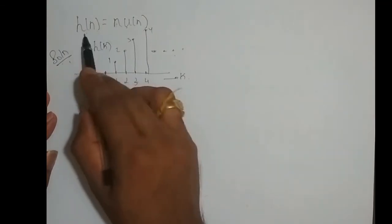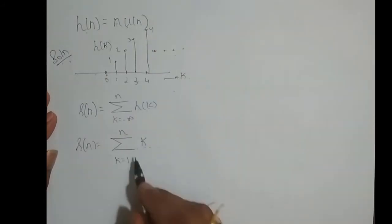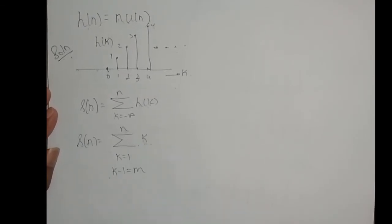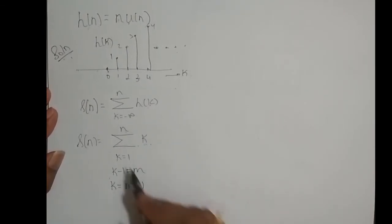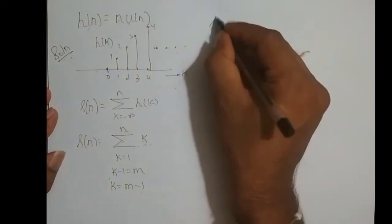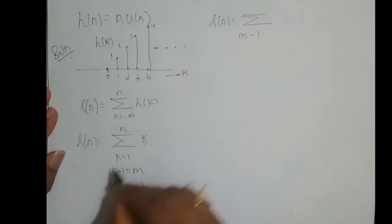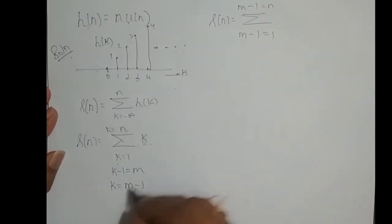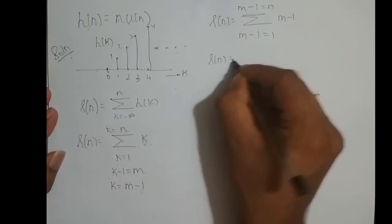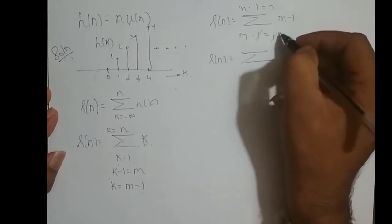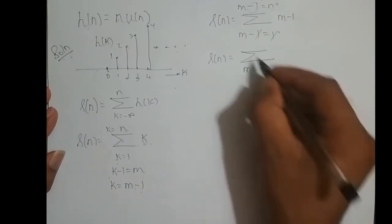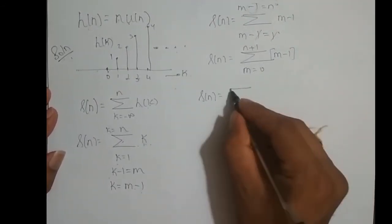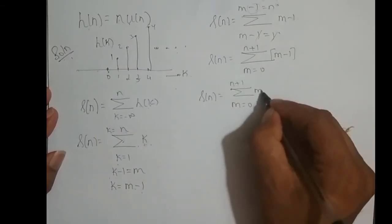Why is this k and not n? Because I have to write it in terms of k — this is h of k, so I replace n by k. Now I have to bring this lower limit to 0. I take k minus 1 and call it dummy variable m, so k equals m plus 1. Wherever k appears in the summation, I replace it by m plus 1. So s of n equals summation with m varying from 0 to n plus 1, of m minus 1.